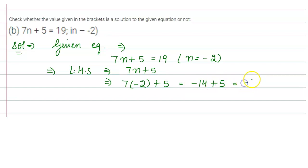Now in RHS you have 19. Therefore, LHS is not equal to RHS, and n equals minus 2 is not the solution of the given equation. I hope this is clear, thank you.